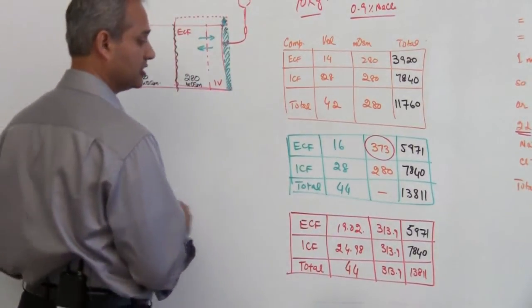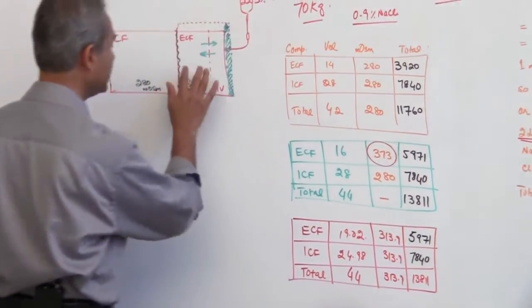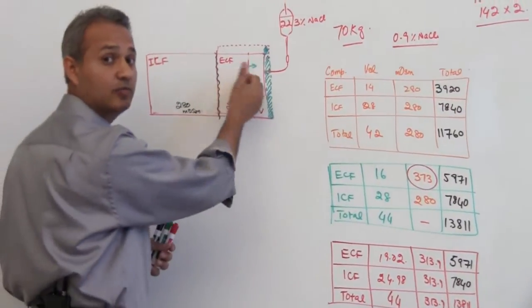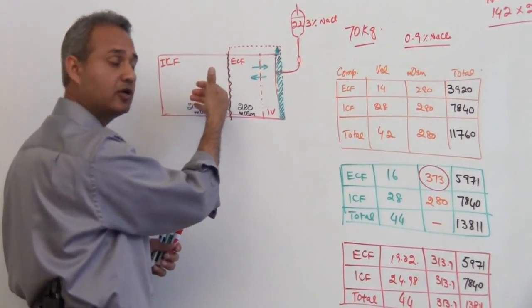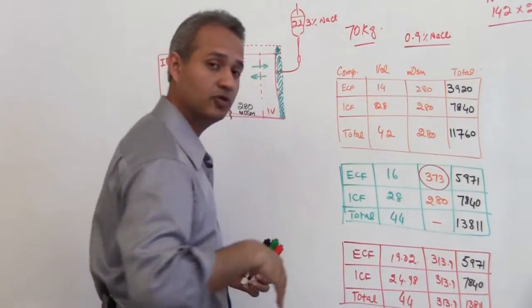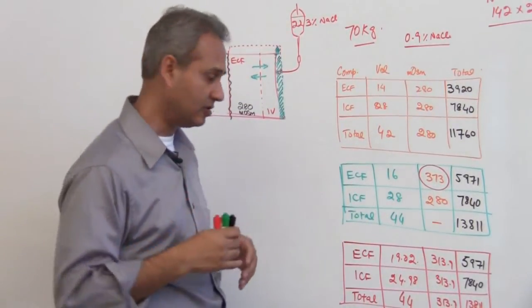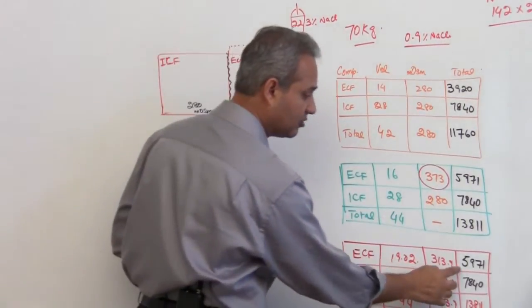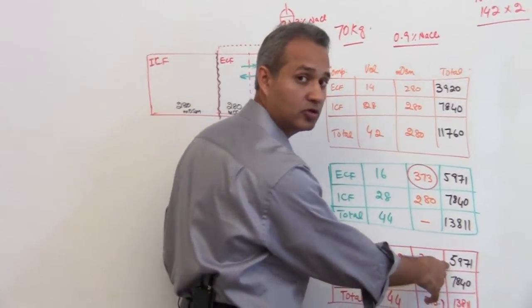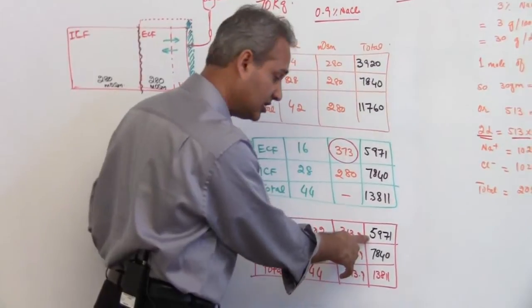Now what we need to do is we also need to see, can the sodium which we added here can it move in the cell? No. Why not? Because even if it would move, cell is going to throw it out. Why? Because of the sodium potassium pumps - in our previous lectures we talked about it. So that means the osmolarity or total milliosmoles in the ECF are going to be staying constant.